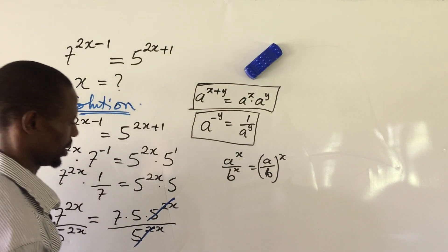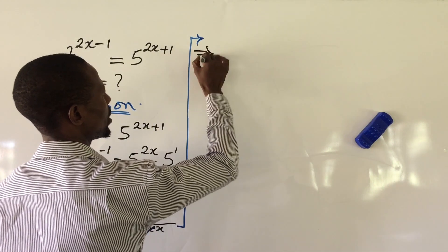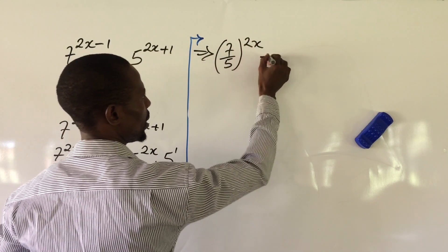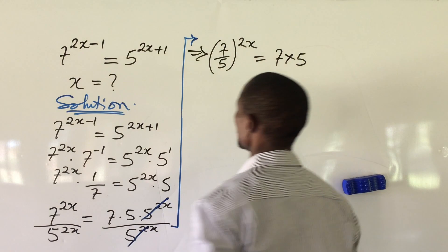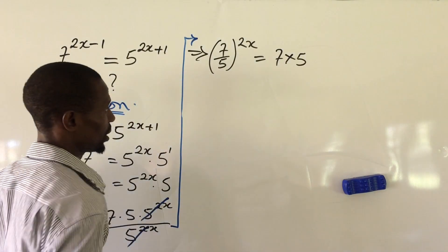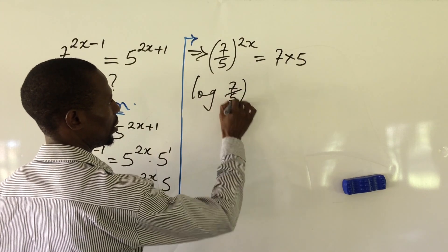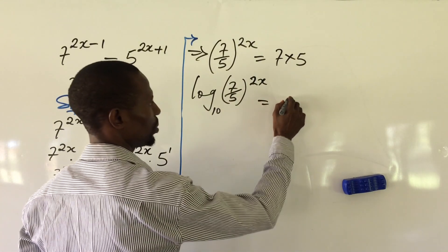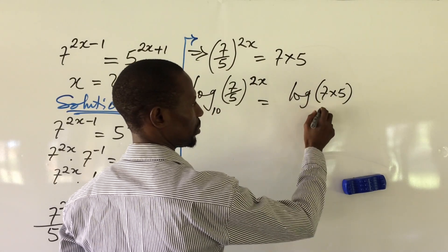Let's continue. This now implies 7 over 5, all to the power of 2x, equal to 7 times 5. At this point in time, let's take log to base 10 of both sides of the equation. This gives us log of 7 over 5, all to the power of 2x, base 10, equal to log of 7 times 5, base 10.